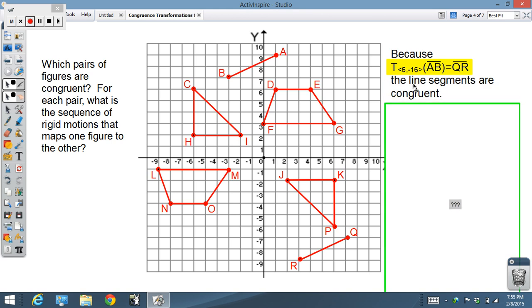Therefore, we can write the rule that the translation over 6 down 16 on segment AB becomes QR. We know that these line segments are congruent. Next, I can look at the triangle here. Once again, if I do a rotation, and I can't do this all at once, but if I do a rotation around 180 degrees around the origin, I end up landing it at JKP.